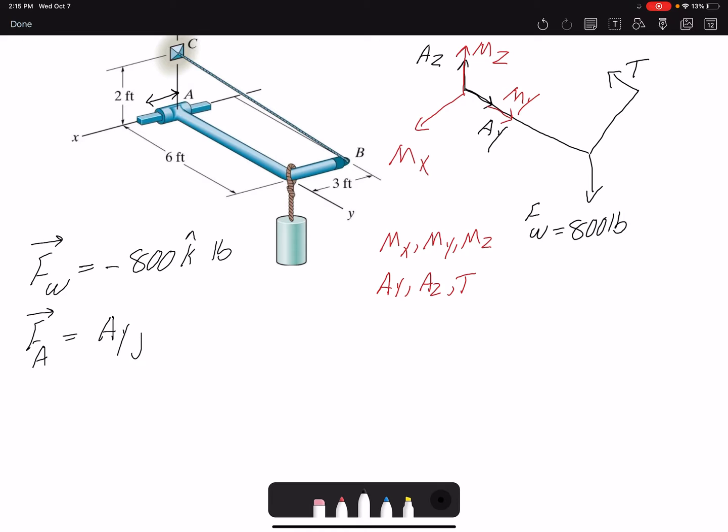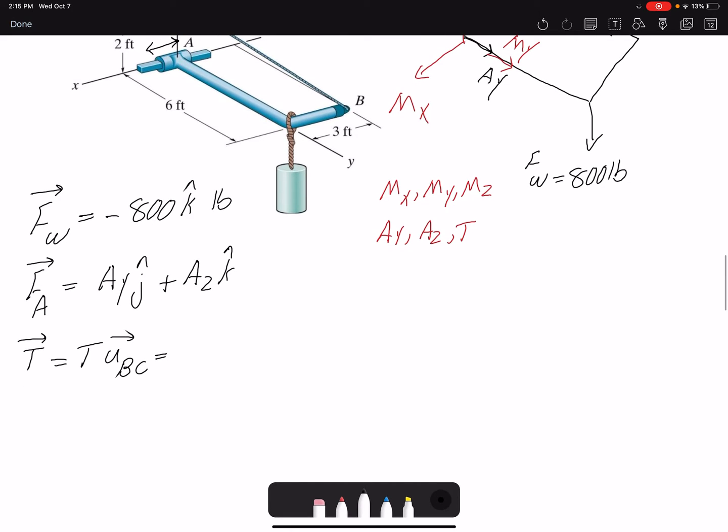And I have the tension. I don't know the magnitude but I know the direction is from B to C. So if we multiply it by unit vector I can find it in Cartesian form. The unit vector from B to C is the position vector divided by its magnitude.